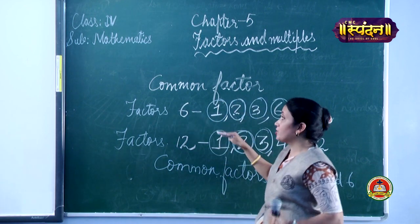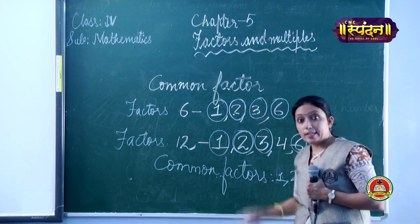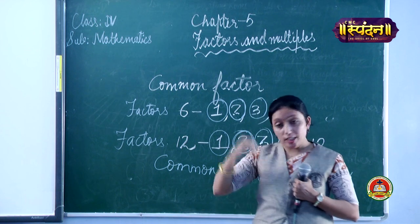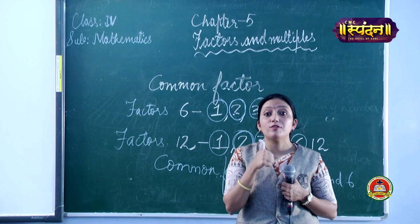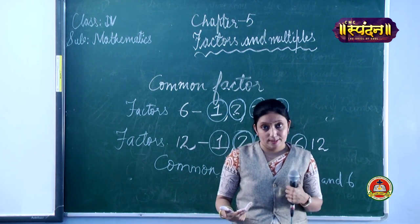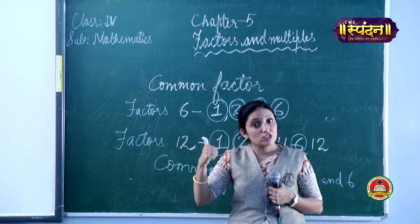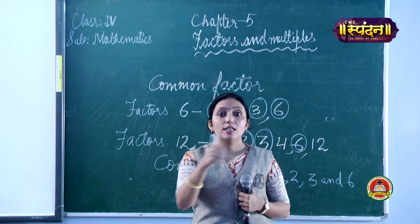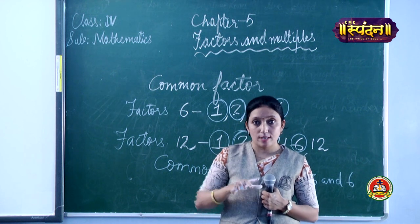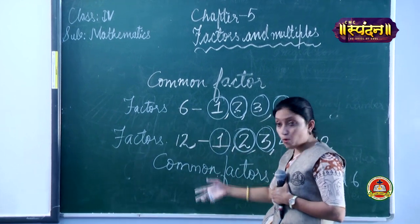A common factor is one that appears in the factor lists of all the numbers being compared. Even if there are three numbers, the factor must match in all three to be called common — just like three teachers all wearing the same jacket: that jacket is what is common in all of them. You can take two or three numbers and compare accordingly.